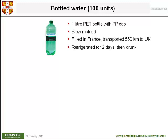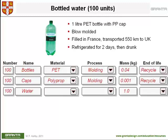We'd like to know what the lifecycle energy and lifecycle carbon emissions for this scenario look like. Here is the input table for the audit tool. The first line describes the bottle itself. We'll do the analysis for 100 bottles. The material is PET, the process is molding, the mass per bottle is 40 grams. At end of life, we'll presume that the bottle is recycled. The second line shows the input for the 100 caps: polypropylene, molded, each cap weighs one gram. They too will be recycled. The last line describes the water, which has to be included to calculate the energy of transport from France to the UK — 100 liters, each liter weighing a kilogram.